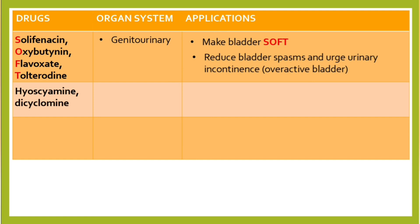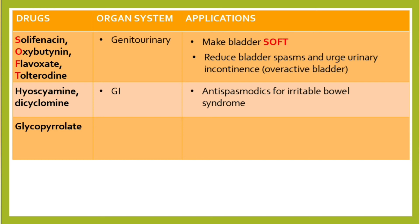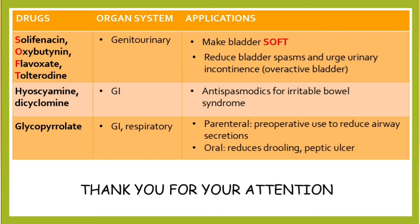Hyoscyamine and dicyclomine act on the GI tract as antispasmodics for irritable bowel syndrome. Glycopyrrolate is used in the GI tract and respiratory system — given parenterally as a pre-operative agent to reduce airway secretion, and orally to reduce drooling and treat peptic ulcers.